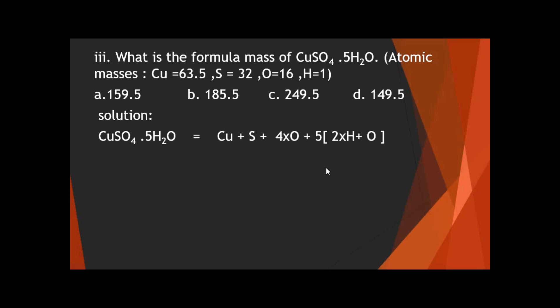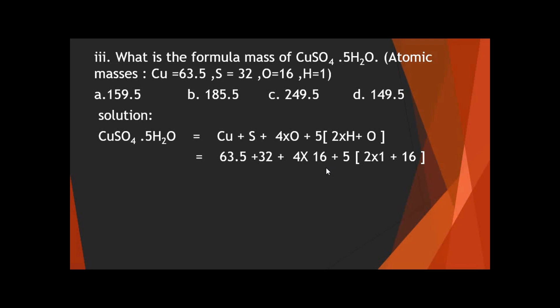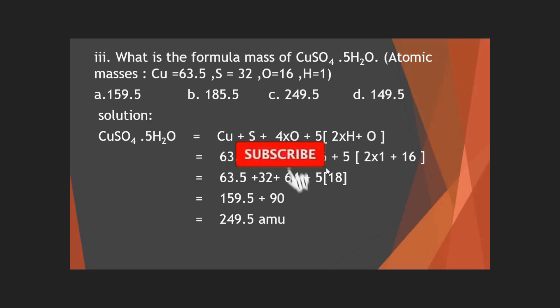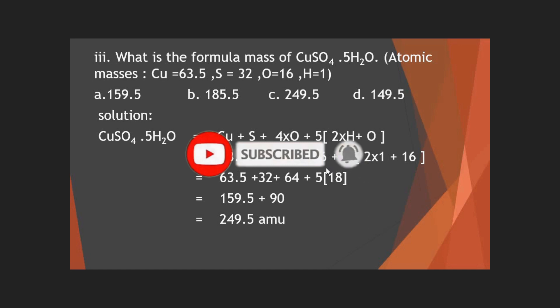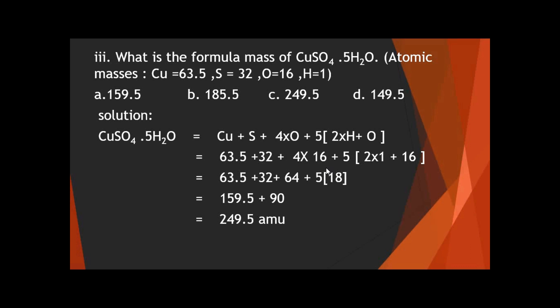Solution: CuSO₄·5H₂O = Cu + S + 4O + 5H₂O. Putting in atomic masses: 63.5 + 32 + (4 × 16) + 5 × (2×1 + 16) = 63.5 + 32 + 64 + 5×18 = 159.5 + 90 = 249.5 amu. So the formula mass of pentahydrated copper sulfate is 249.5 amu, and option C is the correct answer.